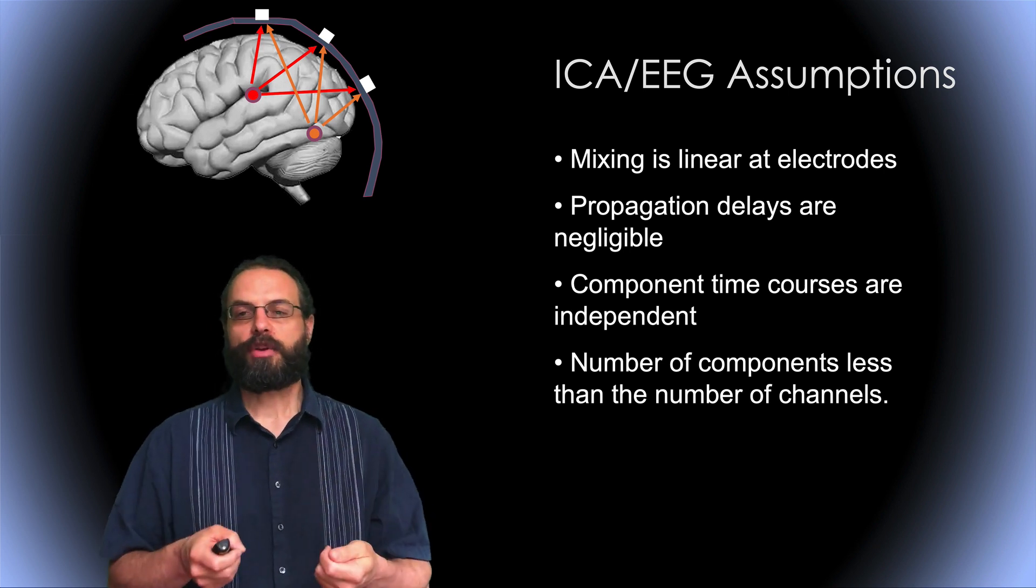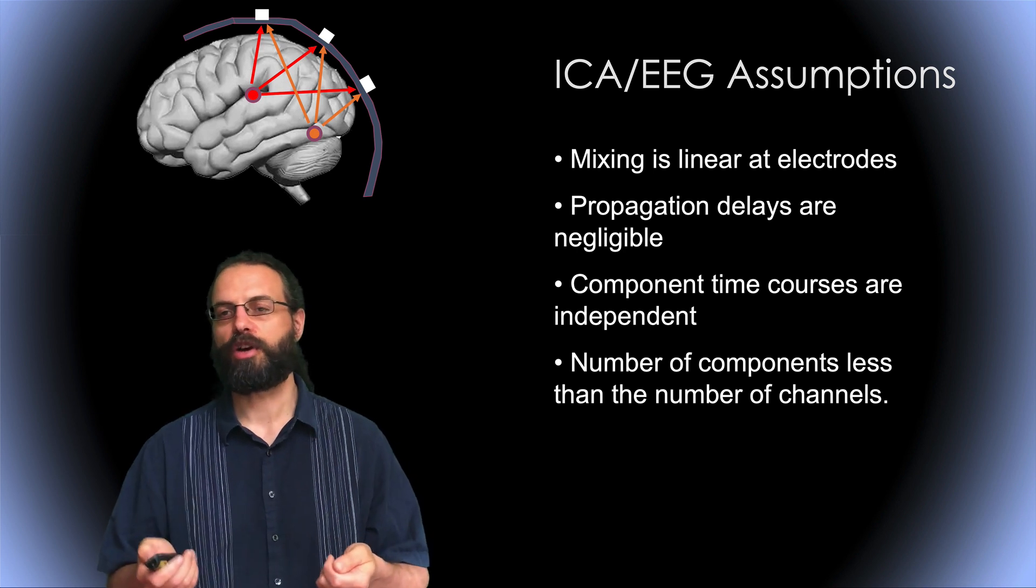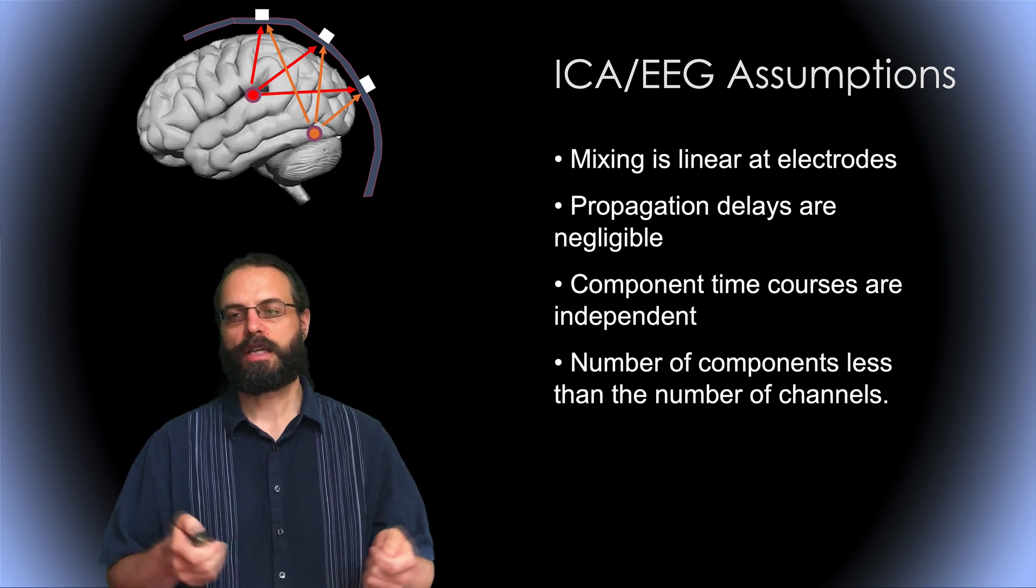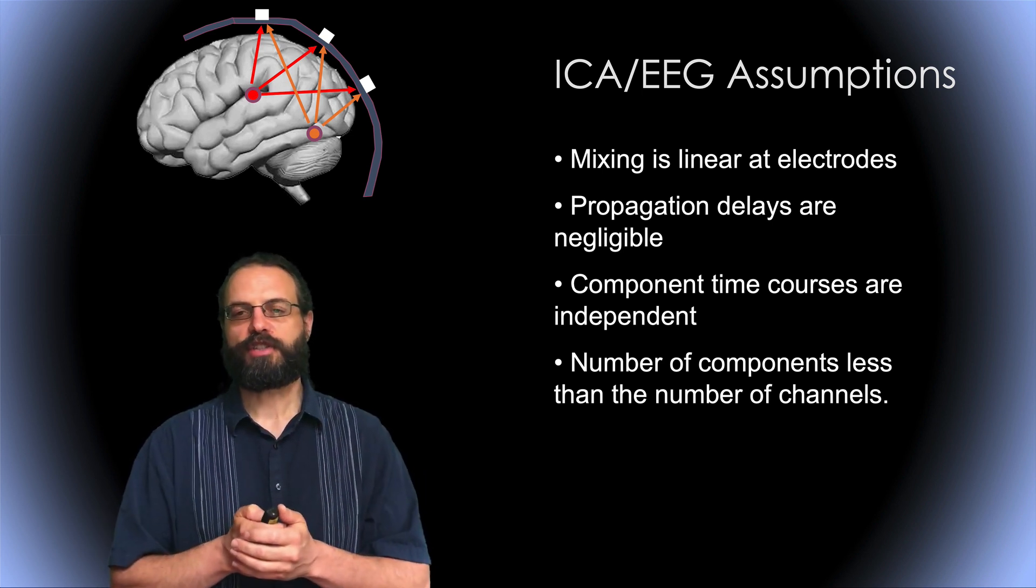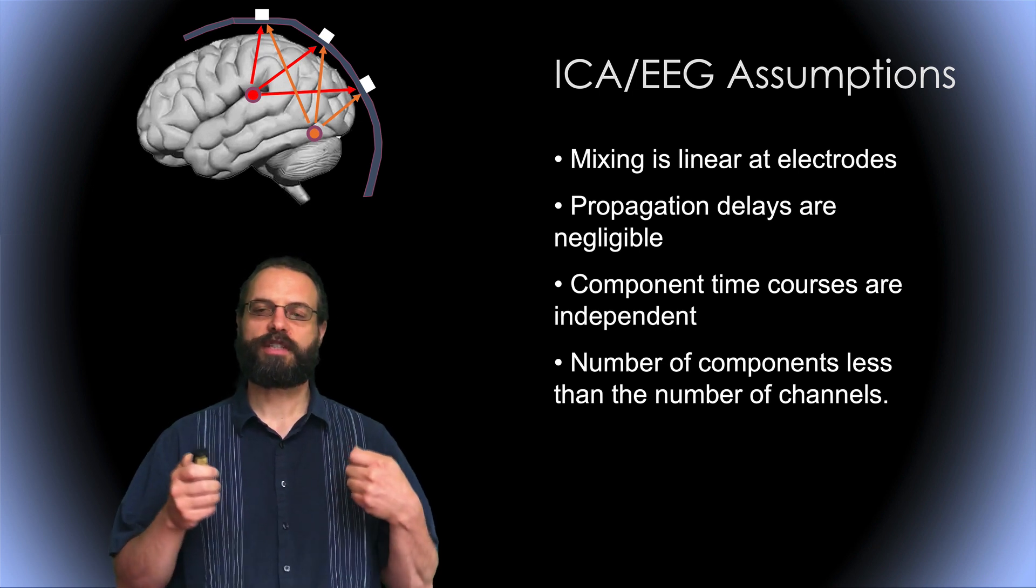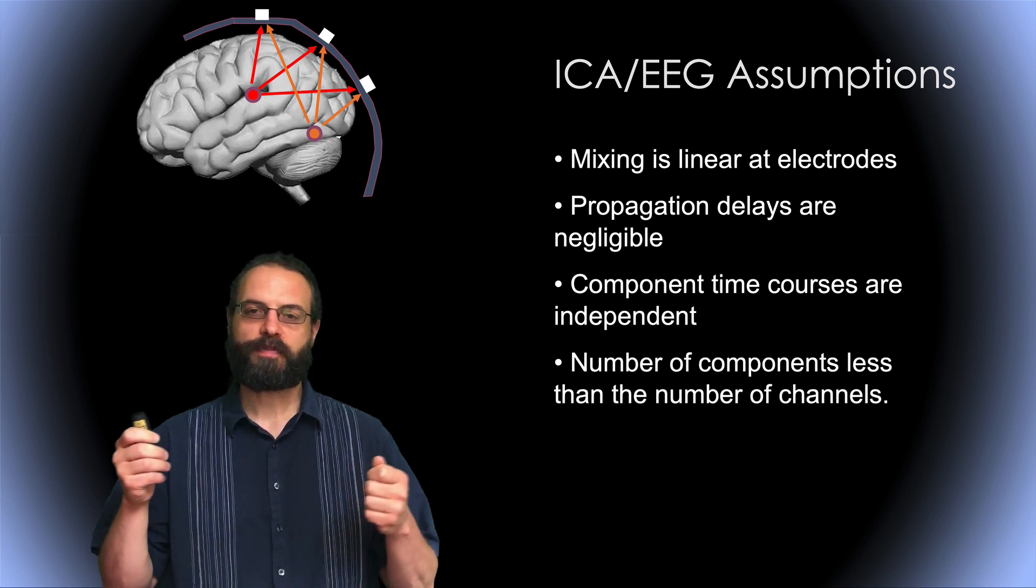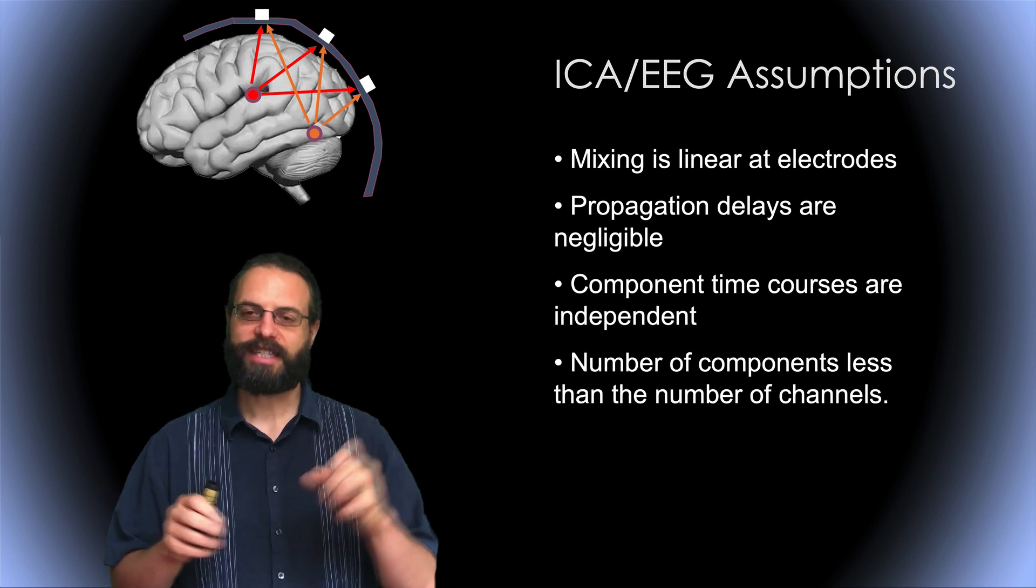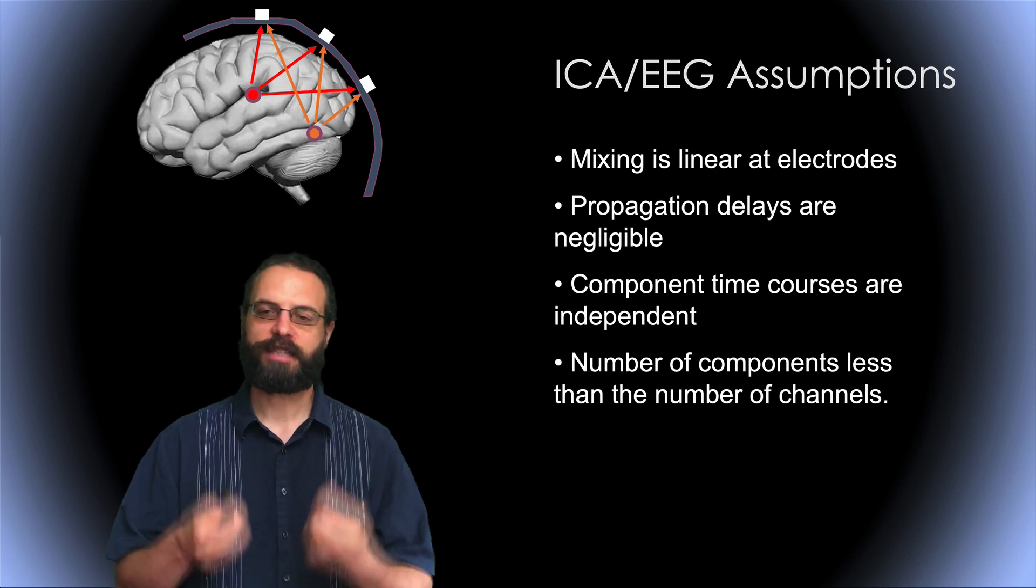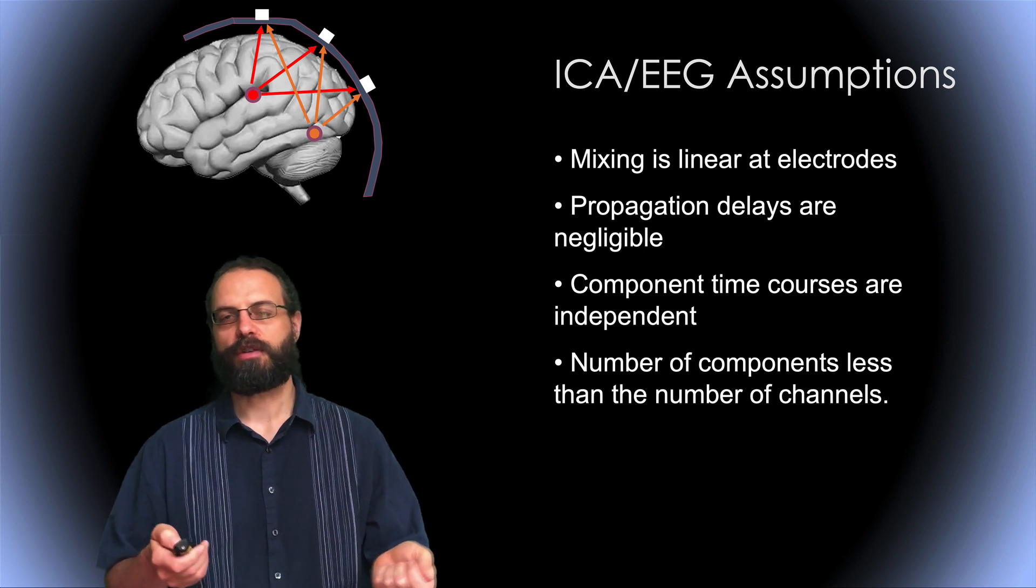The component time courses are independent, so the components are truly independent in the brain. That's not a fully reasonable assumption. But what saves us here is that most ICA algorithms are called maximum projection algorithms, and they will find a solution that's maximally independent. They don't have to be fully independent, they only have to be maximally independent.